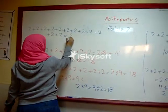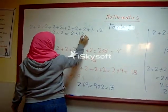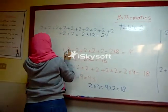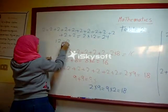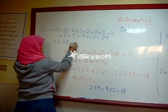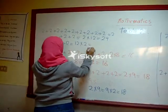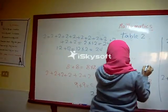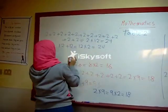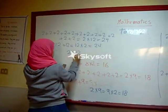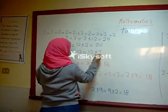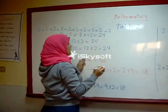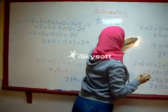Equals two times twelve equals twenty-four. Twelve plus twelve equals twelve times two equals twenty-four. Then we get two times twelve equals twelve times two equals twenty-four. Then Table Two is...